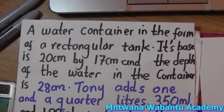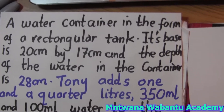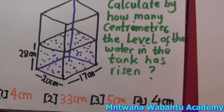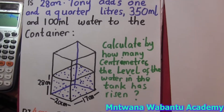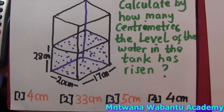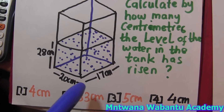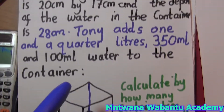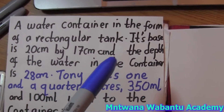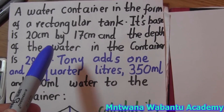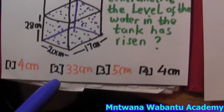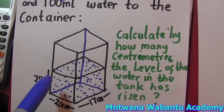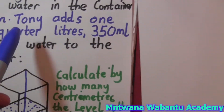Let's get started. We have a question here: a water container is in the form of a rectangular tank. We've got the dimensions here — the height is 28, and the base is 20 by 17, just like you can see. The base is 20 by 17, and the height is 28.